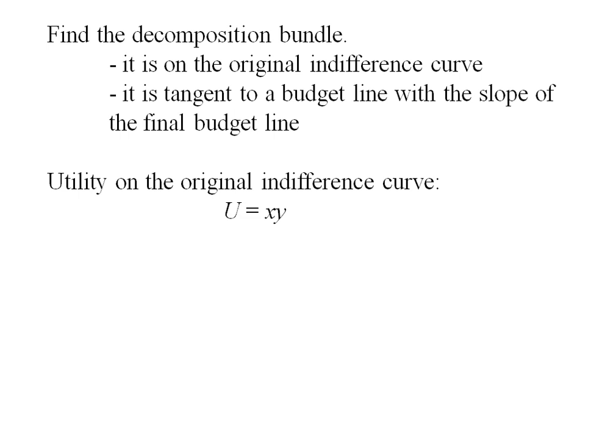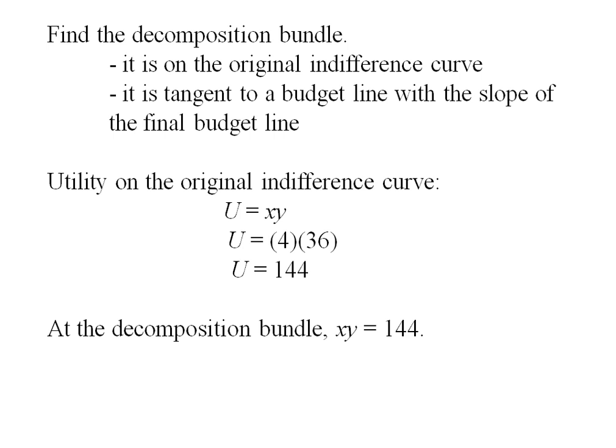So I'll have to find the utility on my original indifference curve. Well, my preferences are u equals x times y, and my initial bundle has 4 units of x, 36 units of y, yielding utility of 144. So my decomposition bundle is still going to have the same preferences as x times y, but I know that whatever that is is also going to have to equal 144.